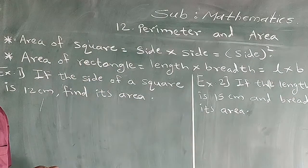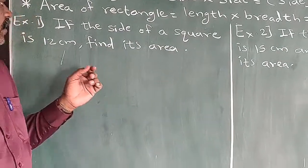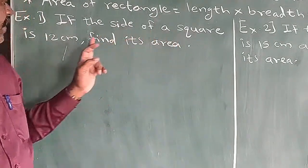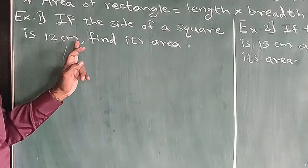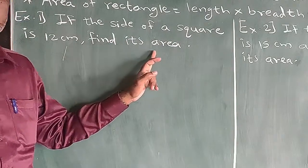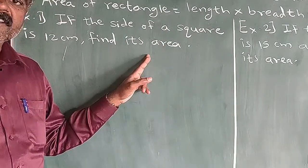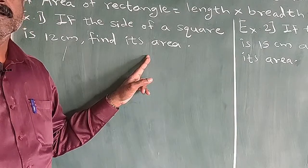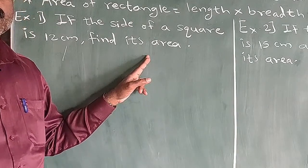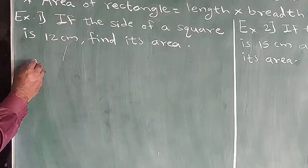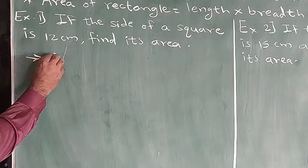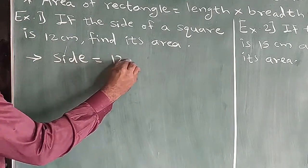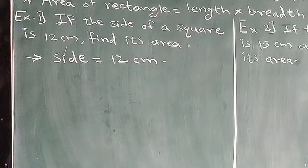See here one example. If the side of a square is 12 cm, find its area. In this example, the length of the side of the square is given as 12 cm. So the given is: side is equal to 12 cm.